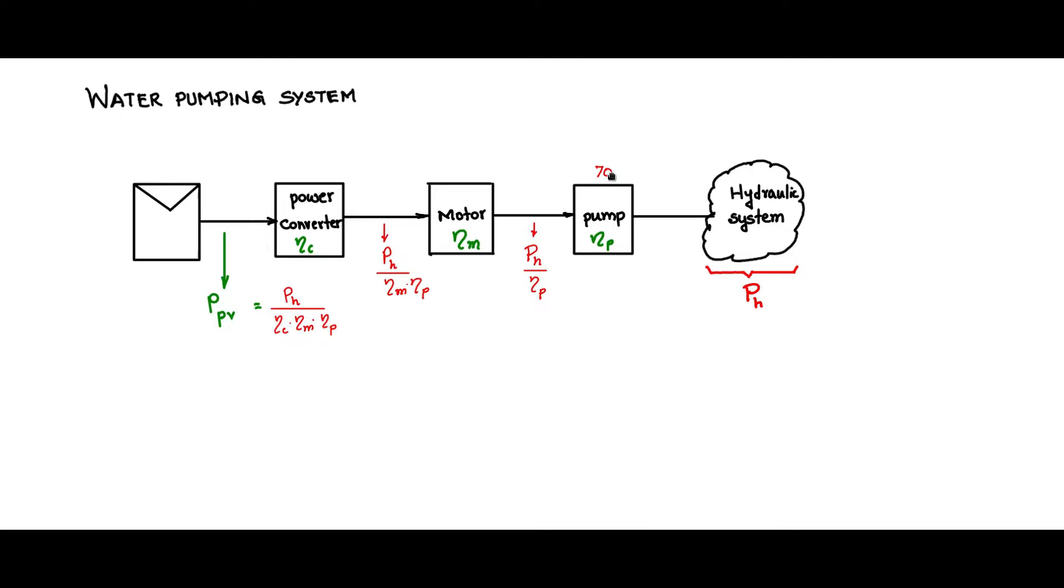Typical values of efficiency are: for the pump 70%, for the motor 80%, for the power converter 90%.